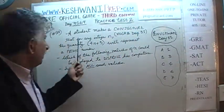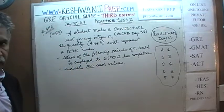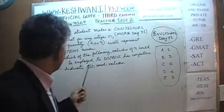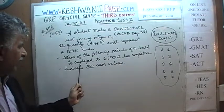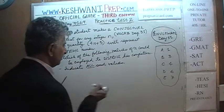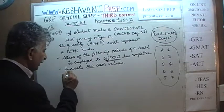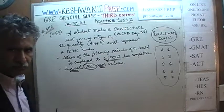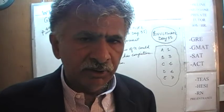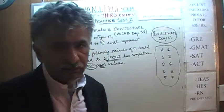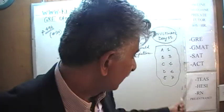So one more time: we have a student who makes a conjecture that for any integer n, the quantity 4n plus 3 will represent a prime number. The question asks which of the following values of n can be used to disprove his conjecture. This is one of those questions where we must indicate all such answers — all valid values. This is probably one reason why people do poorly on these questions, because they find the first answer that works and stop there. But we don't know how many other valid answer choices there are.